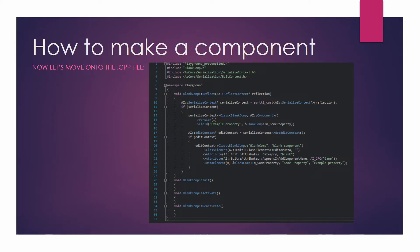First, we have to include all the things required for our component. We include the pre-compiled header for our gem or project — in this case, playground. Then we include the .h file we just made. We also include SerializeContext.h and EditContext.h from AZCore. Next, put all our code within a namespace called playground, or whatever your gem or project name is. Then within that, we define void BlankComp::Reflect(AZ::ReflectContext* reflection) and open the squiggly brackets.